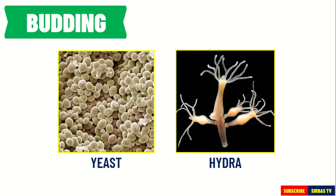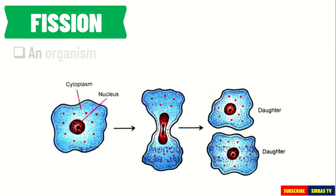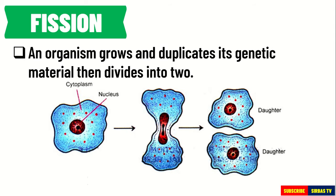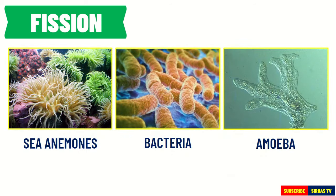Yeast and hydra are examples of organisms that reproduce through budding. The next type is fission, or binary fission. In binary fission, an organism grows and duplicates its genetic material, then divides into two. The results are two genetically identical daughter cells. The word fission means to split or to divide. Sea anemones, bacteria, and amoeba reproduce by fission.